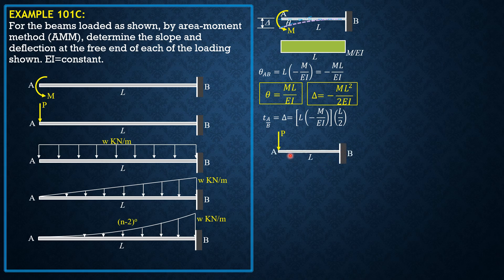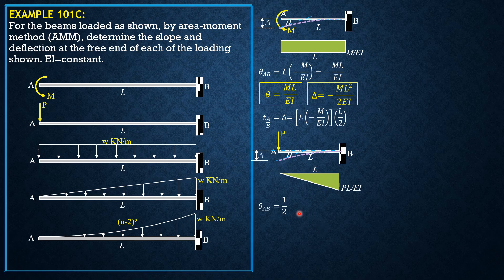For the second situation, the moment diagram by parts is a triangle with magnitude at B equal to negative PL. The location of the centroid from the free end A is two-thirds of L. So theta_AB equals the area of the triangle: one-half of L times negative PL over EI, which gives negative PL²/2EI. The negative sign means the rotation from tangent A to tangent B is clockwise, but the slope at A is positive. Therefore theta = PL²/2EI.